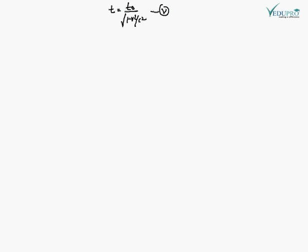Equation 4 हम ले रहे हैं जहां VB की value दी थी, VB is equal to Y upon T. तो T की value equation 5 से put up करने पर, VB is equal to Y upon T0 under root 1 minus V square upon C square.